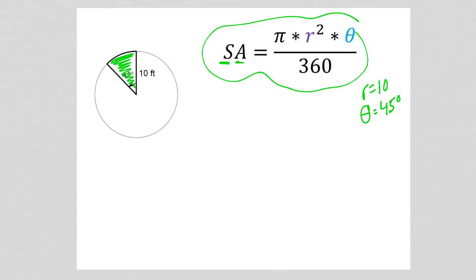And now I'm just going to plug this into my equation. Sector area equals pi times 10 squared times theta, which is 45 degrees, divided by 360.